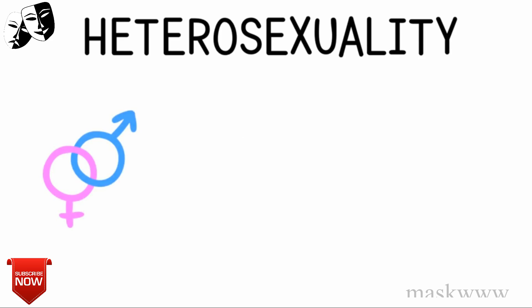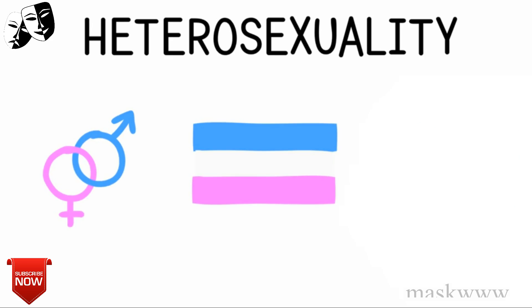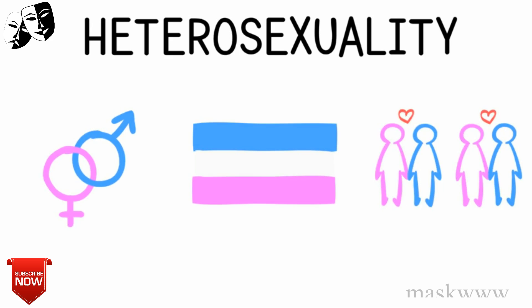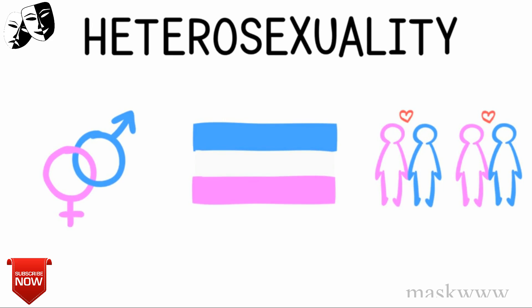3. Heterosexuality. Heterosexuality is probably the most well-known sexuality, and whether right or wrong, it is often thought of as the default. This is known as heteronormativity. It means attraction to genders other than your own, and is most commonly used to refer to binary genders.